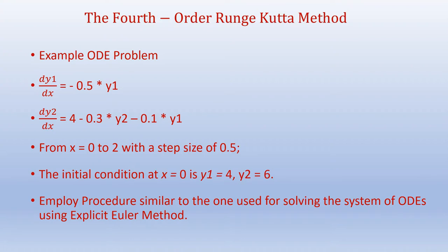We are using the same algorithm for the system of equations. Our example problem is given as dy₁/dx = -0.5·y₁ and dy₂/dx = 4 - 0.3·y₂ - 0.1·y₁. These are a system of coupled first order ODEs because the term y₁ appears on the right hand side of the equation for dy₂/dx. We would like to integrate and solve for y₁ and y₂ from x = 0 to x = 2 with step size 0.4. The initial conditions at x = 0 are y₁ = 4 and y₂ = 6.